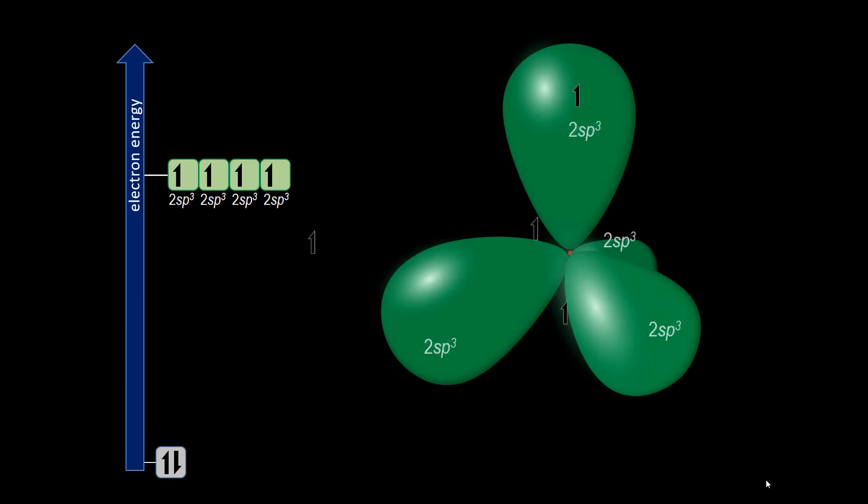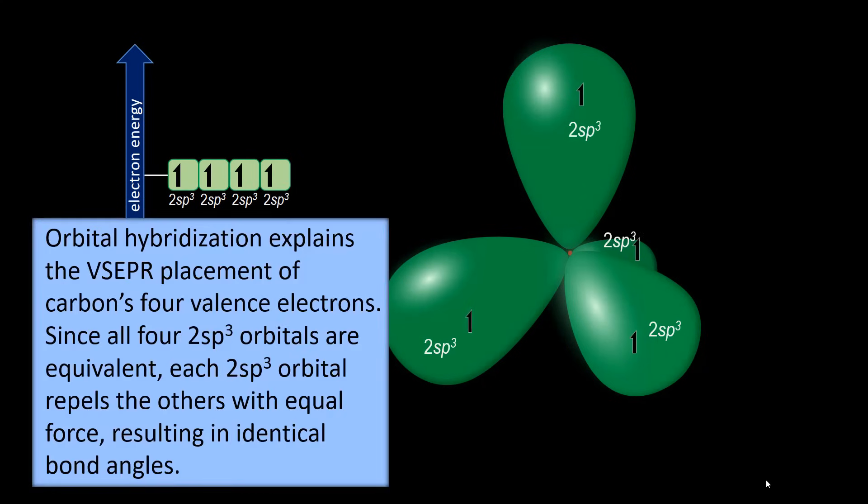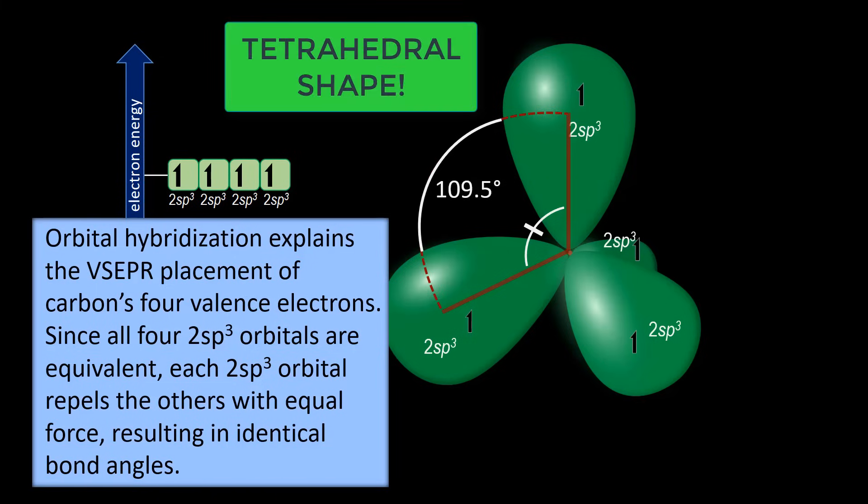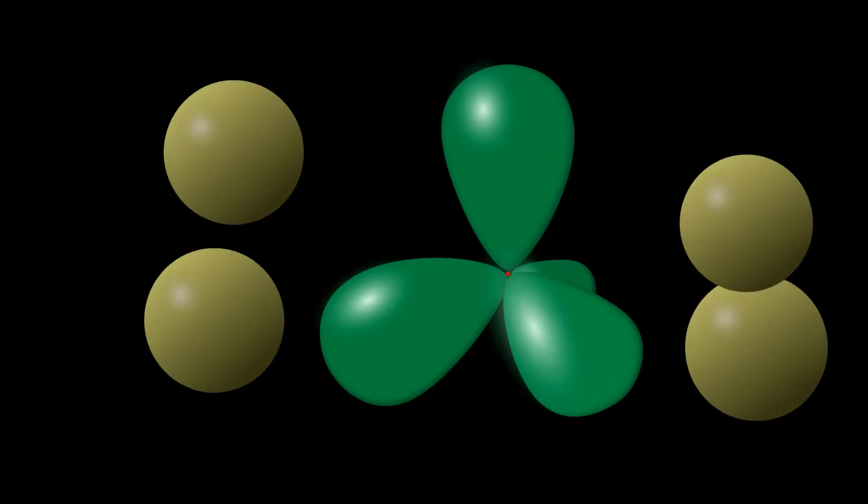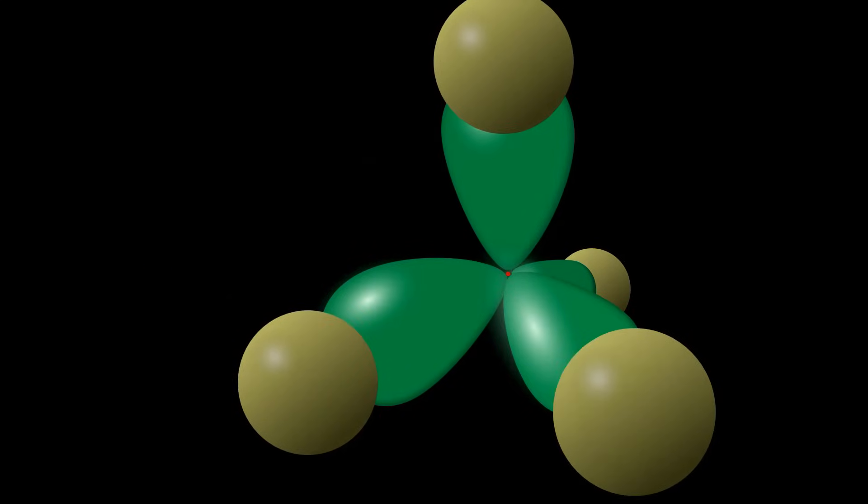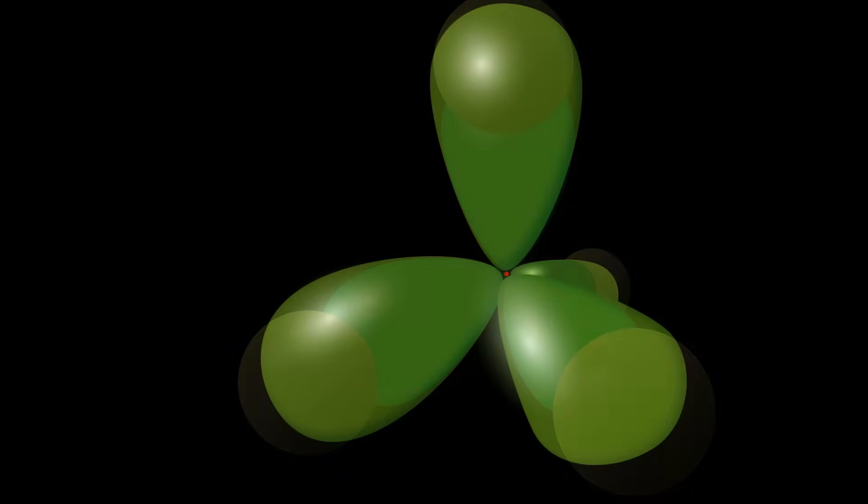We can see that orbital hybridization explains the VSEPR placement of carbon's four valence electrons. Since all four 2sp3 orbitals are equivalent, each 2sp3 orbital repels the others with equal force resulting in identical bond angles. The carbon atom only hybridizes when it is in a bonding situation. Here four hydrogen atoms bond to carbon by overlapping their orbitals with carbon's hybrid orbitals.